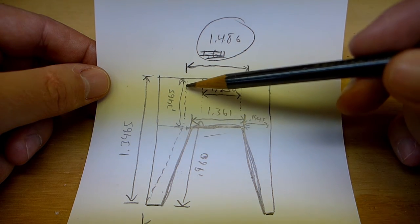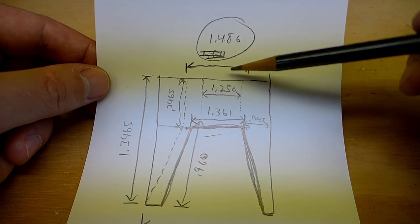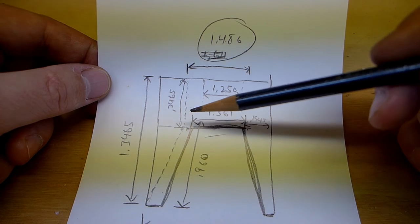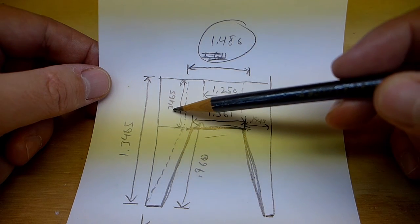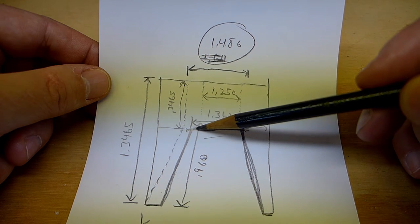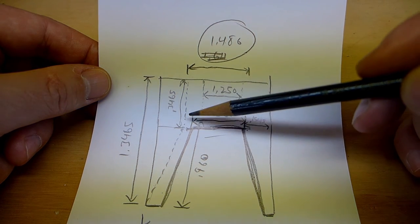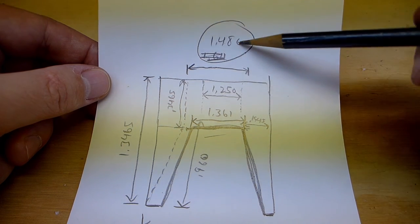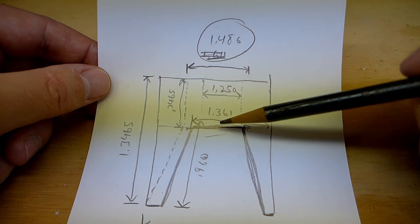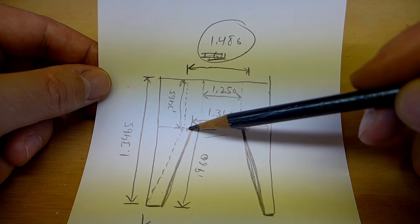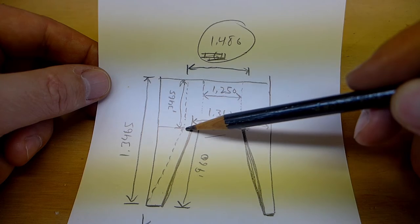So I'm going to turn this down, this fat part here, I'm going to turn down to 1.486. And it's 0.3465 from the top down to this surface. Actually, that's what I'll do. I'll cut this down to 1.486, which is a little bigger than this, down to this surface.